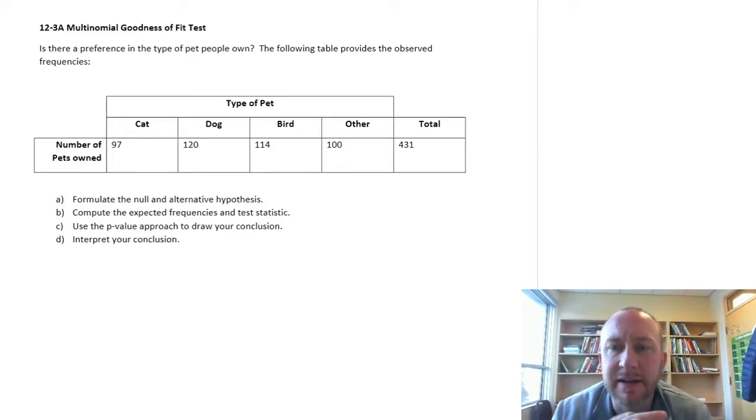Hello and welcome to this next exercise. We're going to look at the multinomial goodness of fit test, very similar to other exercises we've done in this module, but actually I think a little bit simpler still. What we're looking at is a simple question here: is there a preference in the type of pet that people own?